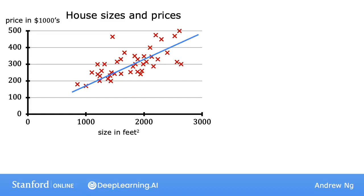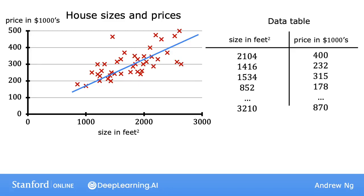In addition to visualizing this data as a plot here on the left, there's one other way of looking at the data that would be useful, and that's a data table here on the right. The data comprises a set of inputs, this would be the size of the house, which is this column here. It also has outputs, you're trying to predict the price, which is this column here. Notice that the horizontal and vertical axes correspond to these two columns, the size and the price. And so if you have 47 rows in this data table, then there are 47 of these little crosses on the plot on the left.